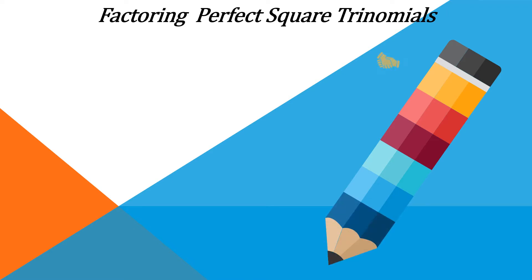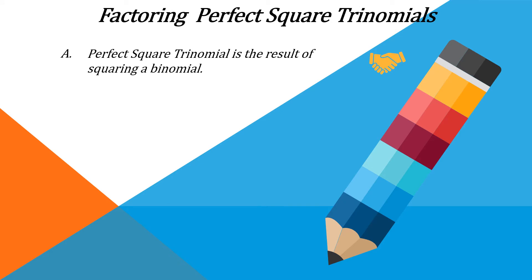In this topic, we have to study that a perfect square trinomial is the result of squaring a binomial. As I have told you, we will reverse the procedure of what we have done in our previous topic, which is the square of binomials resulting in trinomials.